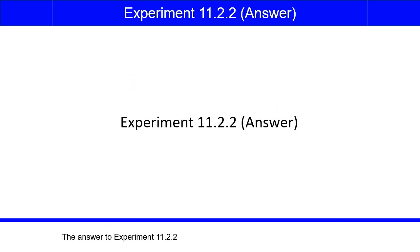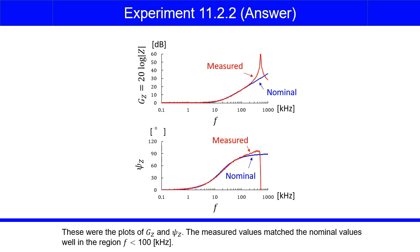The answer to experiment 11.2.2. These were the plots of GZ and psi Z. The measured values matched the nominal values well in the region F is smaller than 100 kHz.